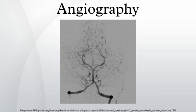The heart images are taken at 15-30 frames per second, not using a subtraction technique. Because DSA requires the patient to remain motionless, it cannot be used on the heart. Both these techniques enable the interventional radiologist or cardiologist to see stenosis inside the vessel which may be inhibiting the flow of blood and causing pain.